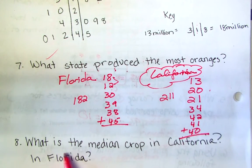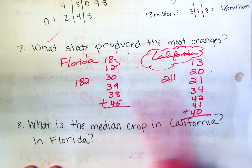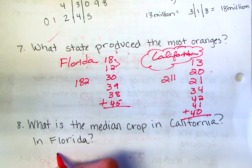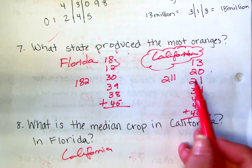So it's asking us what is the median crop in California and what is it in Florida. The first thing I need to do is order these from least to greatest. We'll do California first because that's what it's asking us to do first.